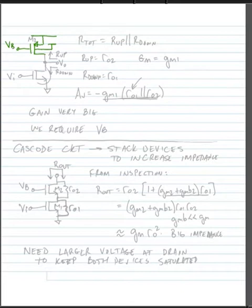We're going to hook the gate of the PMOS transistor M2 up to a bias voltage VB, and then we're going to use an NMOS transistor as our transconductor where we put the input on the gate, take our output on the drain, so this is a common source amplifier again.